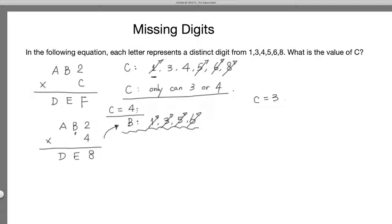And because C equals 3, 2 times 3 equals 6, so F has to equal 6. So we have AB2 times 3 equals DE6. Okay? So again, we're looking at the choices for B. B here, the potential candidates are 1, 4, 5, and 8.